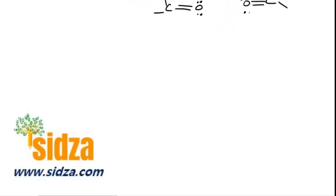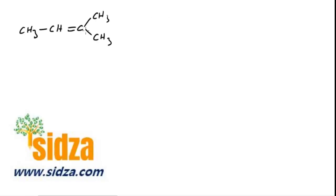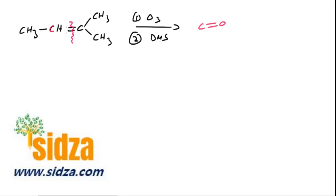Let's practice with a question. We have a molecule CH₃CH double bond. If we do ozonolysis — react with ozone first, then reduction with DMS — you break the double bond and put oxygen on each carbon as a double bond. This carbon has one hydrogen and one methyl group, so this is an aldehyde. The other carbon is bonded with two methyl groups (CH₃ and CH₃) and a double-bonded oxygen, so that's a ketone.